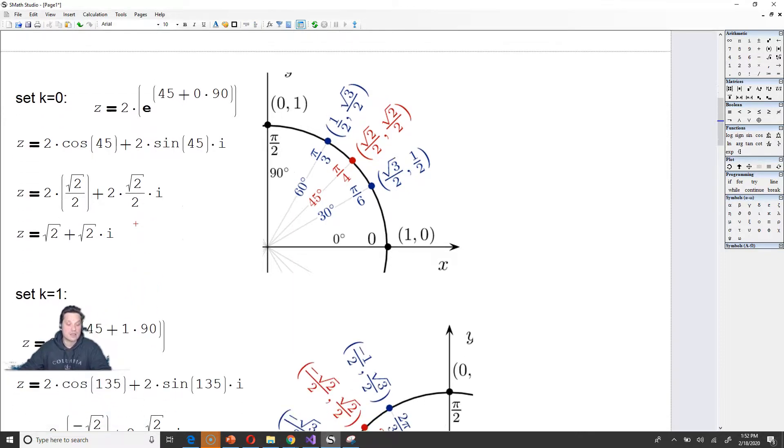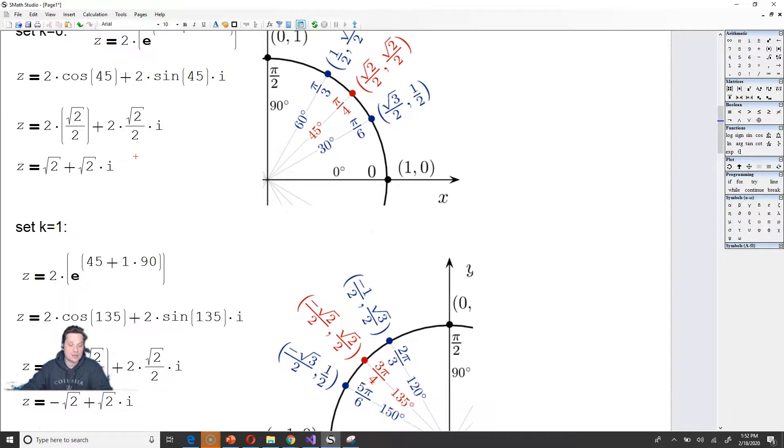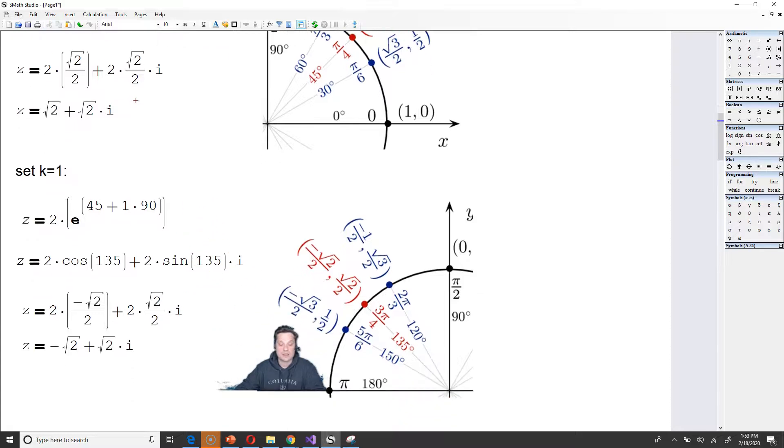So now imagine you set k equal to 1. So it's going to look like 2 times e to the 45 plus 1 times 90. Now 45 plus 1 times 90 is just 45 plus 90. That's 135 degrees. So it's going to look like 2 times cosine of 135 plus 2 sine of 135i. So if you look at the unit circle on the side here, at 135 degrees, or equivalently 3pi over 4 radians, you have the x-coordinate negative root 2 over 2, y-coordinate positive root 2 over 2. So you can make replacements.